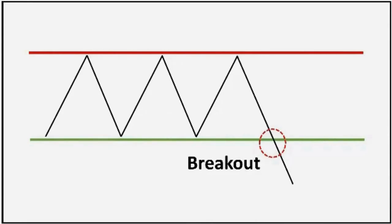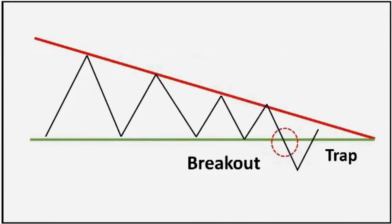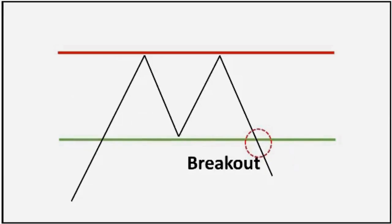Instead of going down, what happens is that the price goes back to the sideways range, indicating it was a trap set for the sellers. The bears end up making a loss. As a trader, I know this really hurts — you follow the pattern, understand the market sentiment, analyze everything properly, but still end up making a loss because your whole analysis was just part of the trap. This type of bear trap can occur in any pattern, like a descending triangle or a double top pattern, which after giving a breakout from support still moves upward.